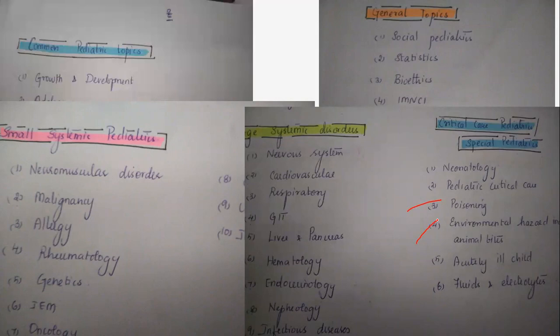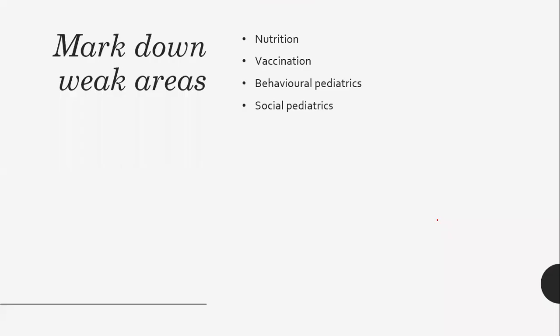Apart from this, add your journal reading and IAP guidelines. Then mark down your weak areas. For me, the weak areas are perennially certain topics — however many times I read them, every time I try to open those topics, I feel slightly threatened.